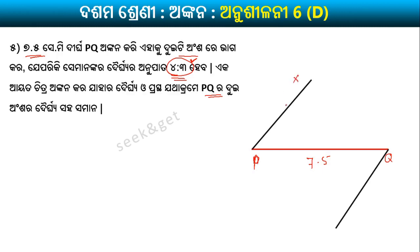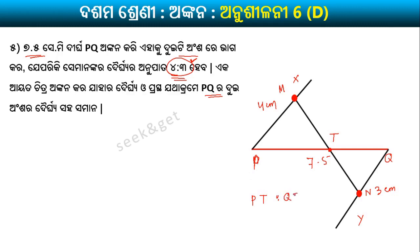On ray PX and ray QY, mark 4 cm and 3 cm respectively. Join M to N. The point where MN intersects PQ gives the division point T, such that PT is 4 parts and QT is 3 parts — confirming ratio 4:3. Place compass on PT or QT to verify equal measurement.